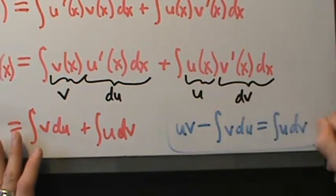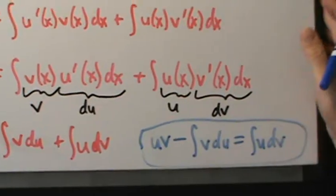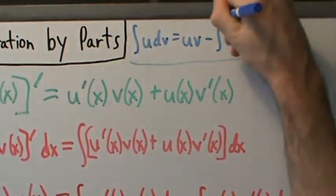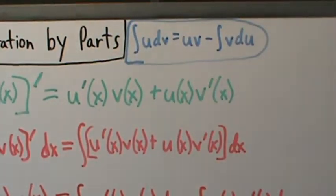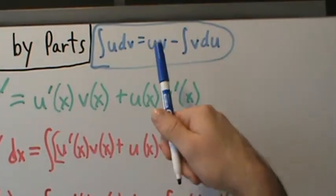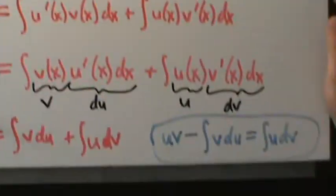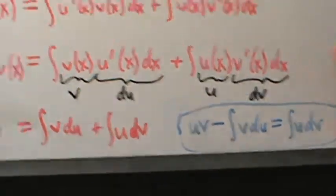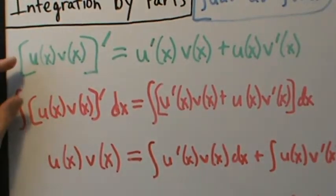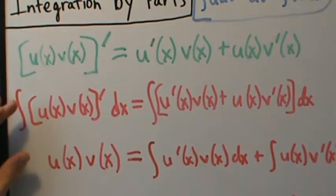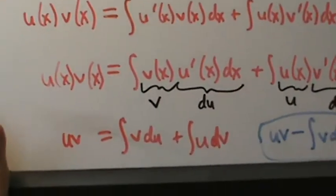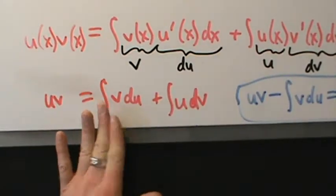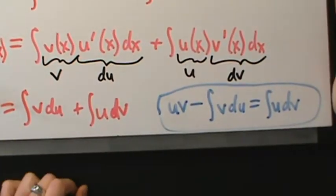So notice this is the same thing just with the sides switched around. That's where the integration by parts formula comes from: the integral of u dv equals u v minus the integral of v du. If you start with the product rule, integrate both sides, rewrite in terms of differentials, and subtract the integral of v du from both sides, then you get the integration by parts formula.